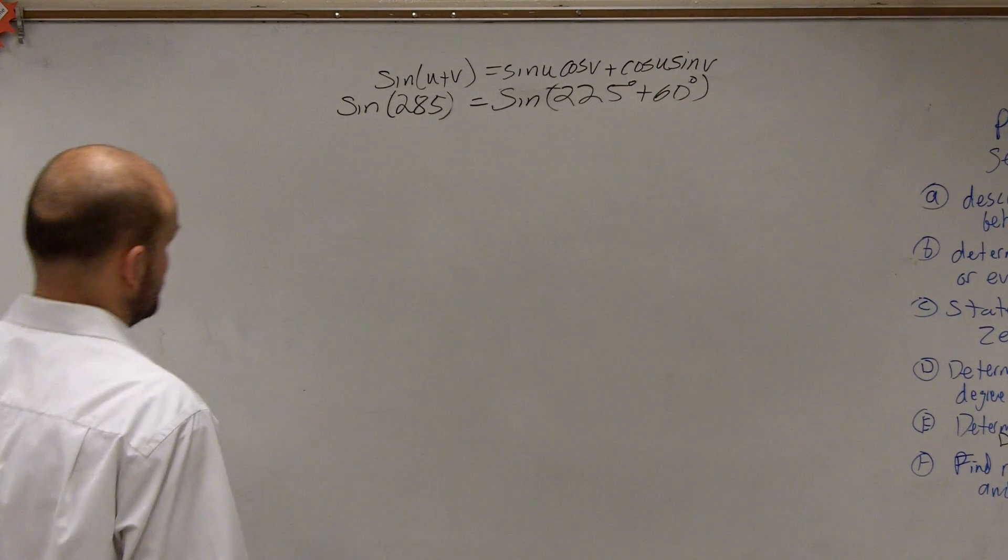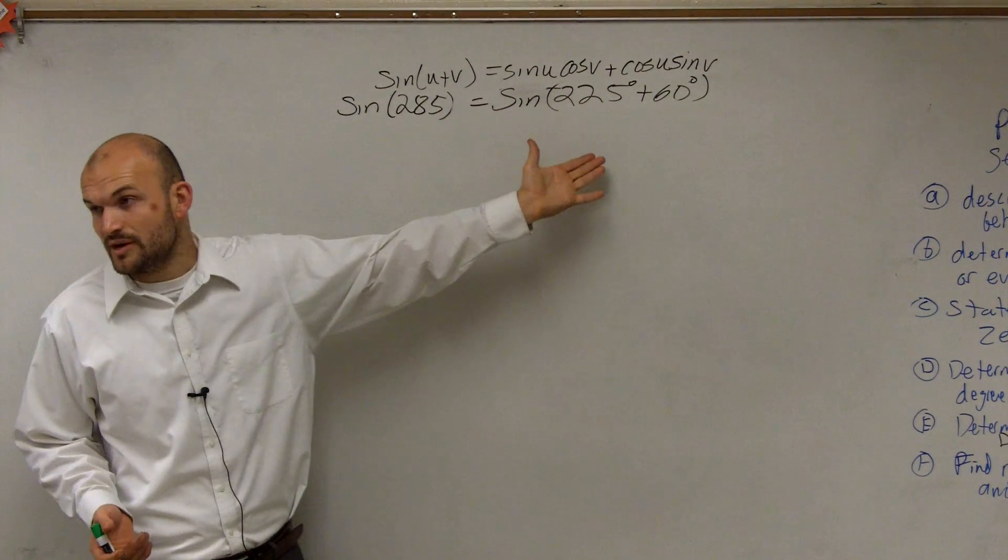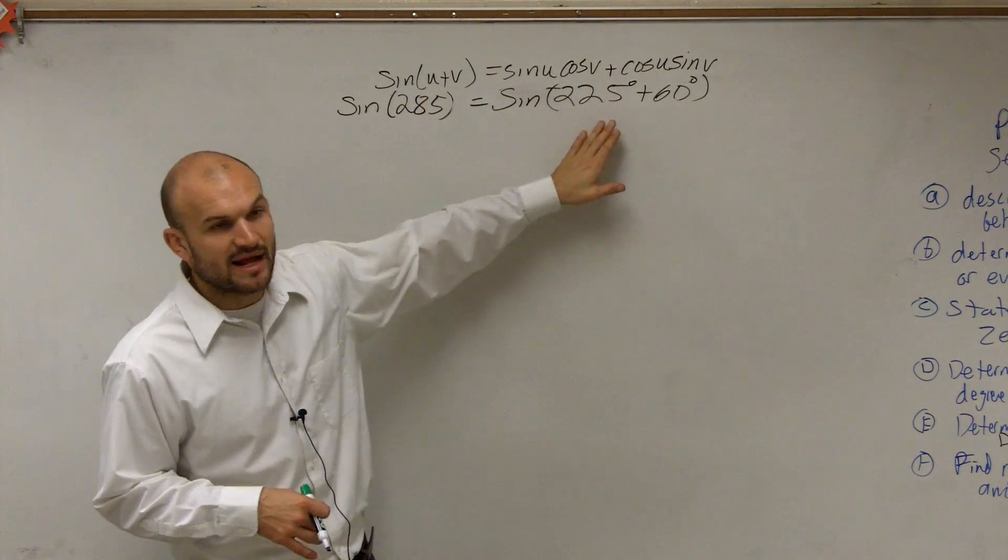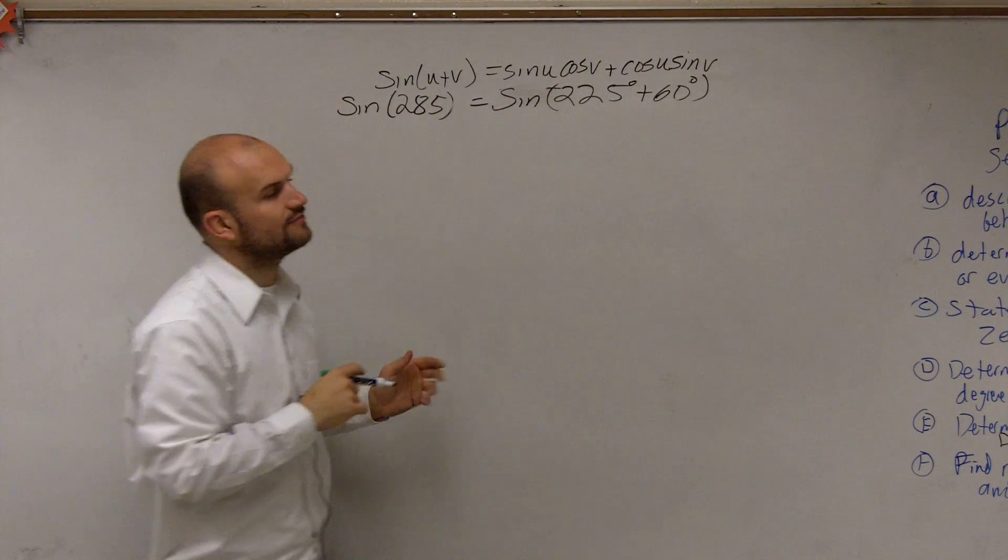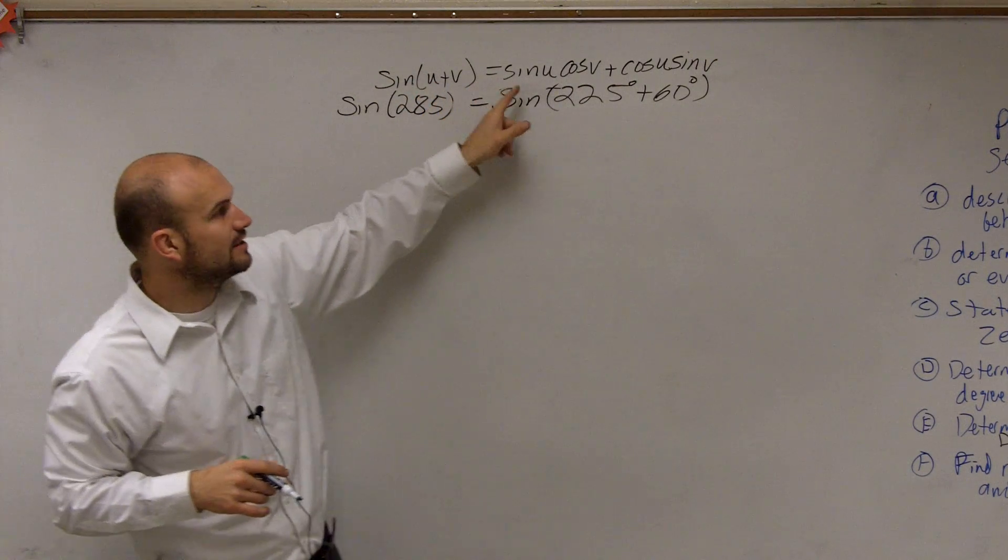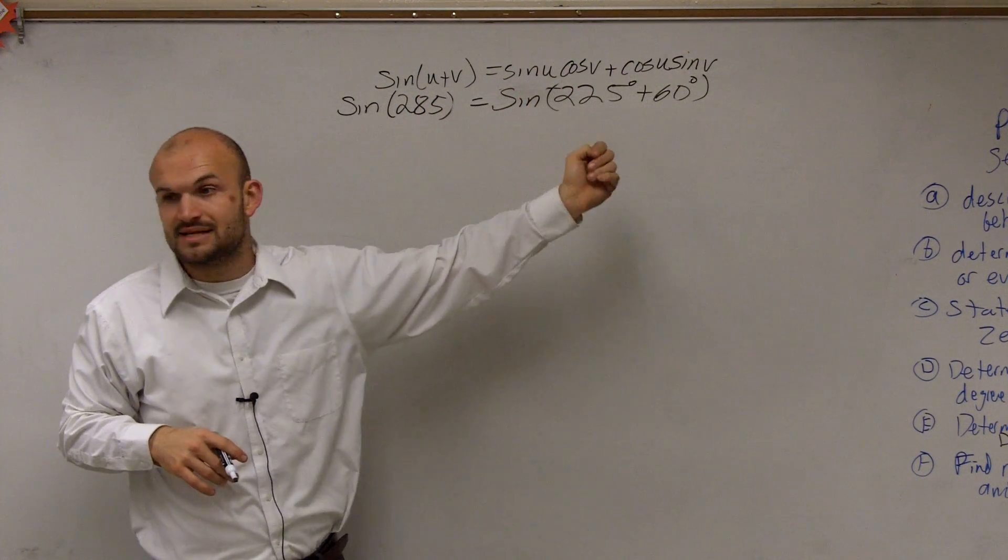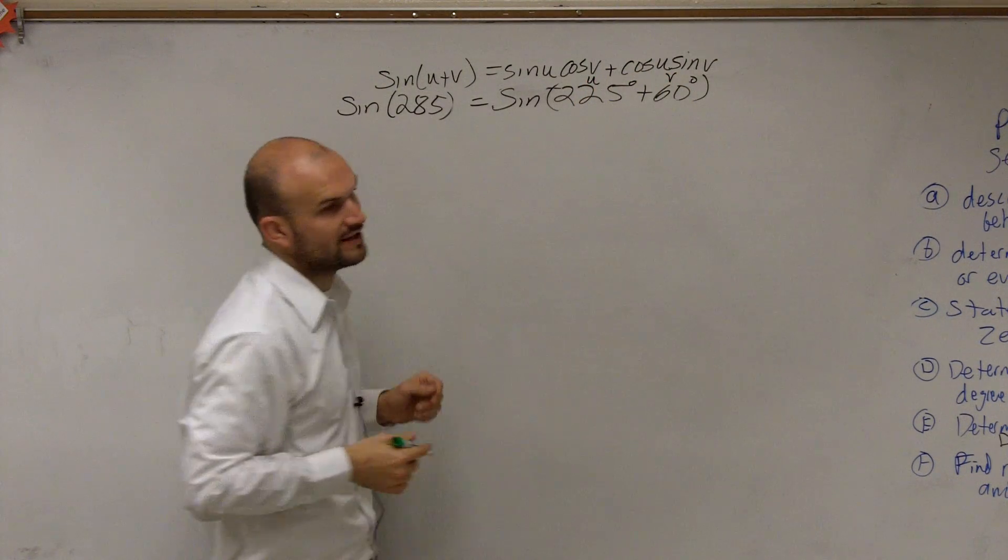OK. By splitting 285 into 225 and 60, we can work with different angles. The main important thing is the sum formula for sine: sin(u+v) = sin(u)cos(v) + cos(u)sin(v). I'm going to label 225 as my u and 60 as my v.